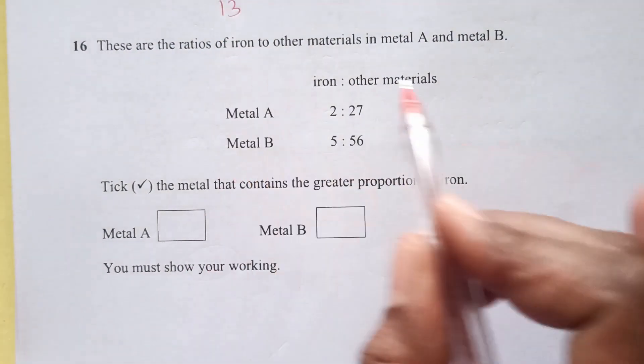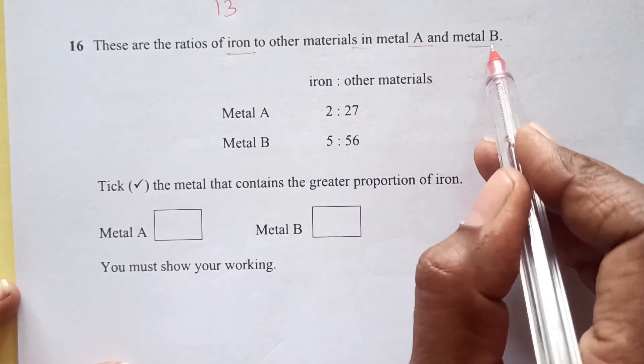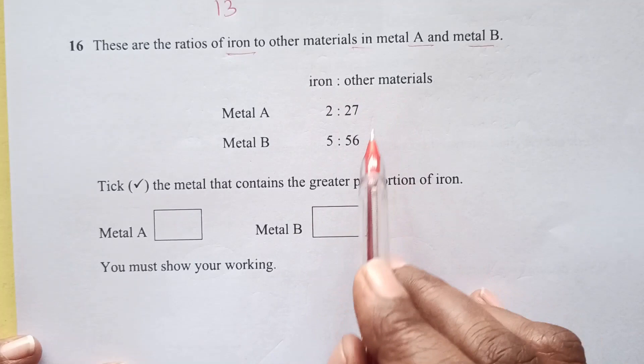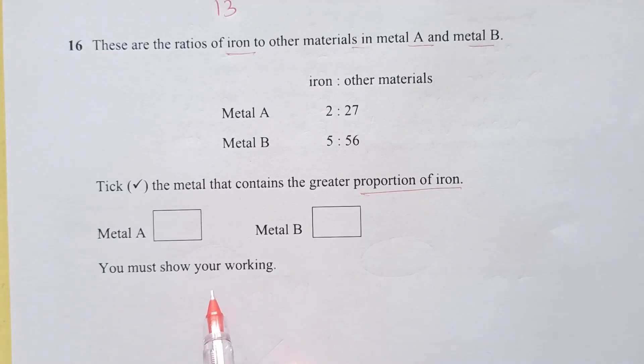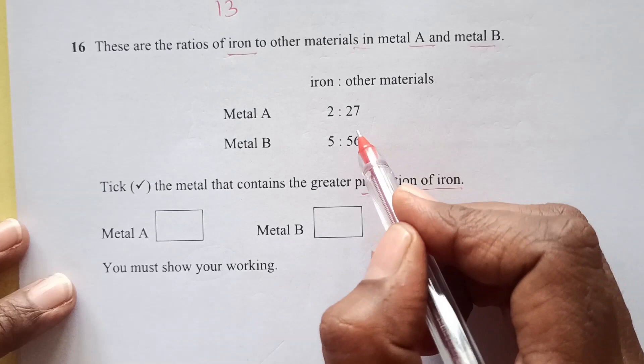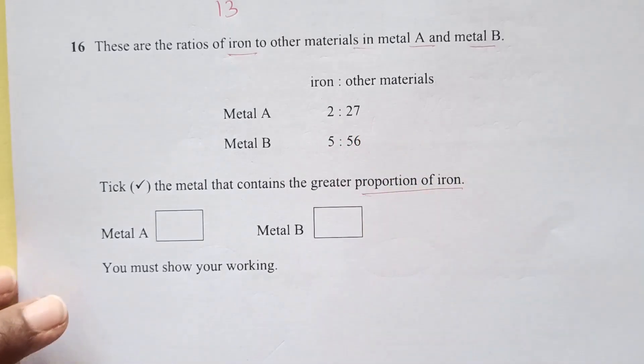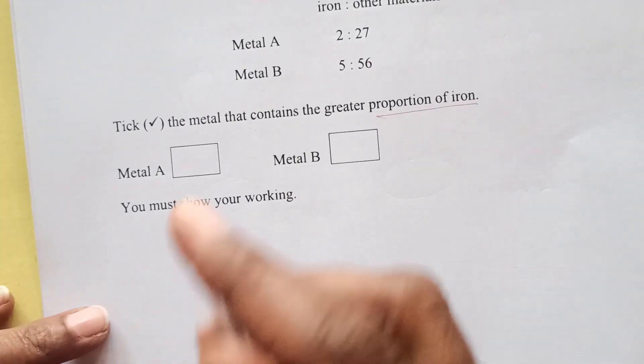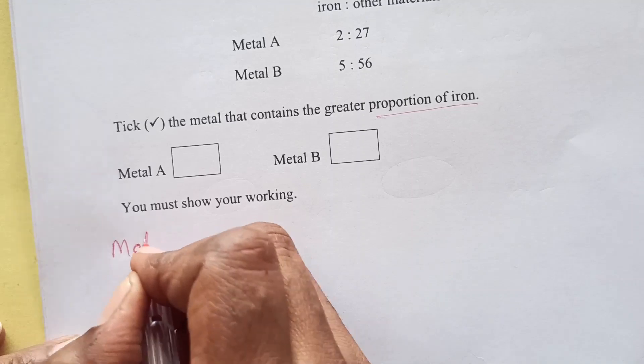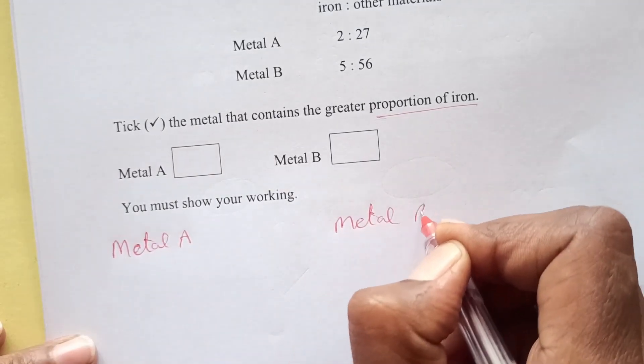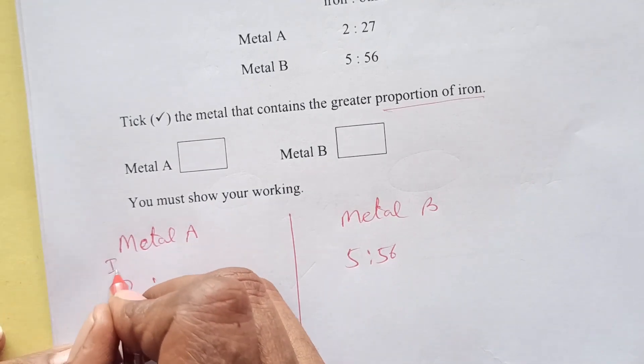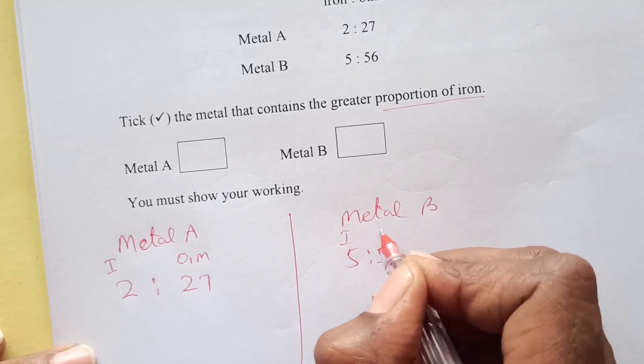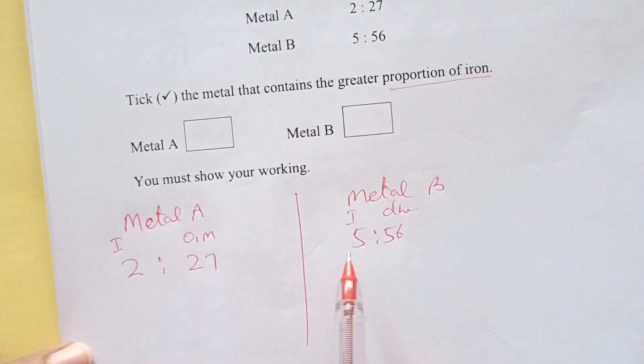Moving to number 16. These are the ratios of iron to other materials in metal A and metal B. Metal A: iron and other material. Take the metal that contains greater proportion of iron. You must show your working. So greater proportion of iron, we can divide to get that value.